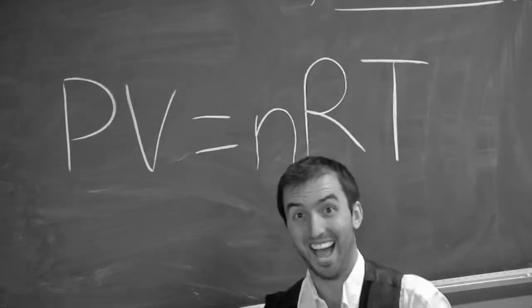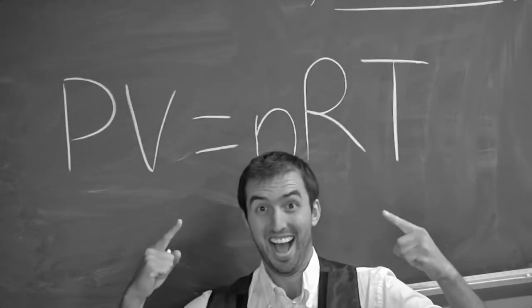A hundred million years ago, scientists discovered the ideal gas law which states PV equals NRT. Today, you are lucky enough to see these 300 million years of science in action.